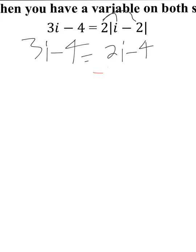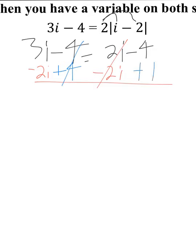Let's get all our i's to one side. 2i is smaller than 3i, so I'll minus 2i over. When I cancel one thing on the right-hand side, I cancel one thing on the left-hand side — so I'll add 4 over. I get 3i minus 2i, which is just i, and negative 4 plus 4 is 0. So i equals 0.